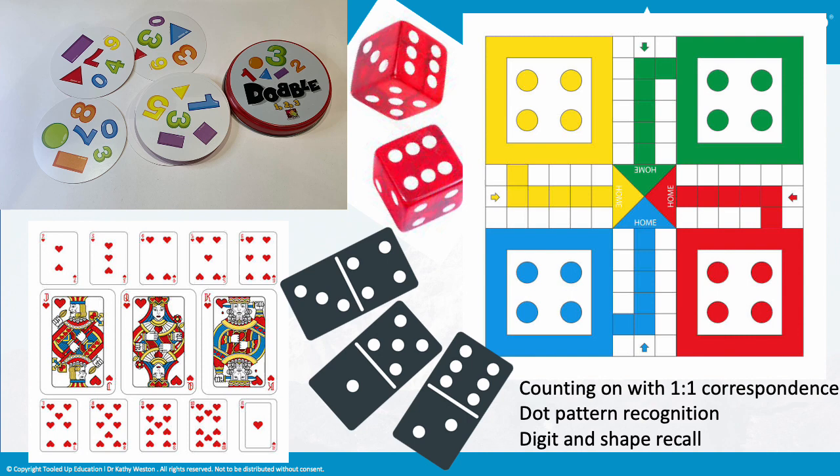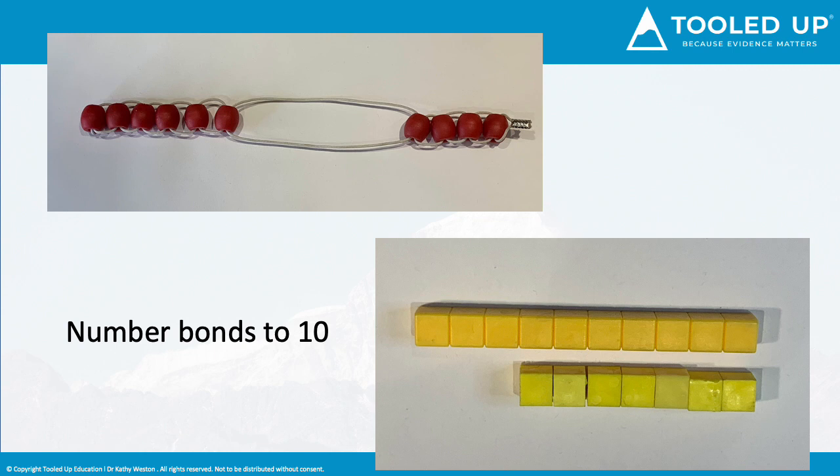Games help counting with one-to-one correspondence and learning dot patterns. We can use doubles to build digit recall and shape recognition, either played slowly to allow processing or for matching. Understanding how 10 is made up is one of the fundamentals that supports maths. A string of beads is a good way to feel and see that 6 and 4 make 10.